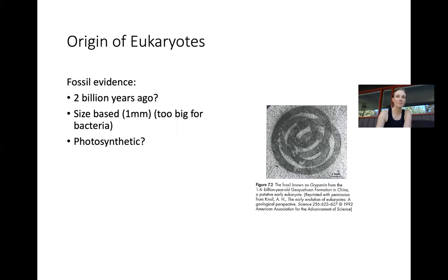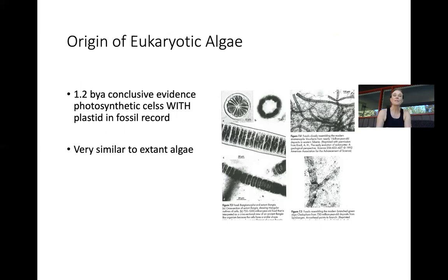What do we know about the origin of eukaryotes? We know it was about two billion years ago. They're very tiny creatures, but we know they're not bacteria — or we think they're not bacteria — because they're too big; they're up to a millimeter in size. We don't know if they're photosynthetic because fossilized evidence isn't great at billions of years. There are conclusive photosynthetic cells 1.2 billion years old where you can see the plastids in the fossil record, and what's crazy is they look almost identical to taxa still alive today.